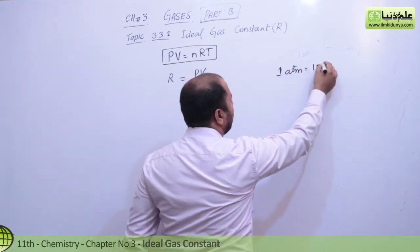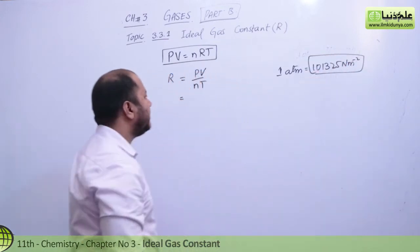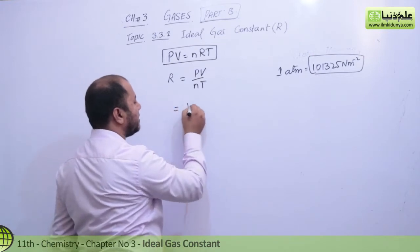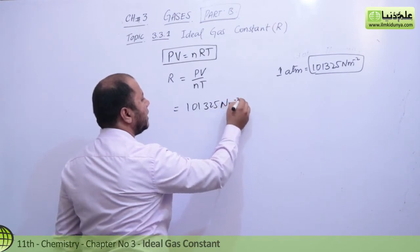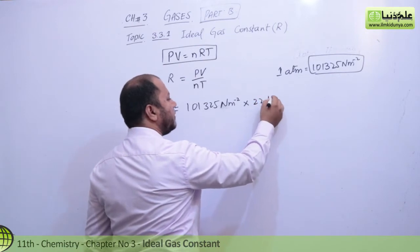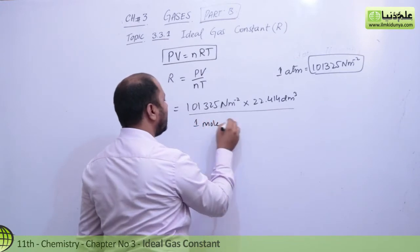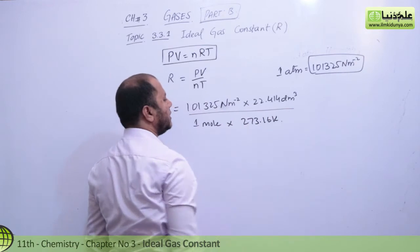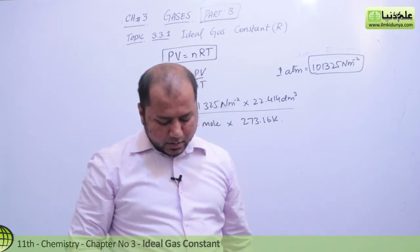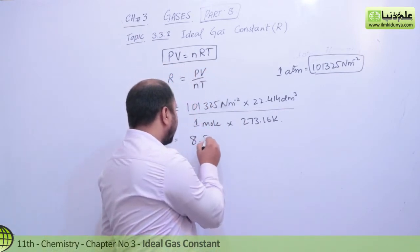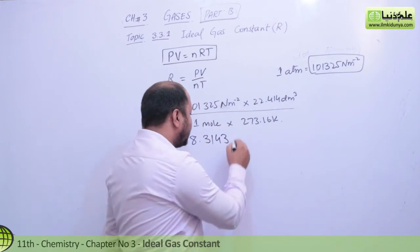Remember: 1 atm equals 101,325 Newton per meter square. So here, pressure in Newton per meter square is 101,325 N/m². Volume will be 22.414 dm³, moles of gas is 1 mole, and temperature is 273.16 Kelvin. After multiplying all these constant values, the value you get will be equal to 8.3143.